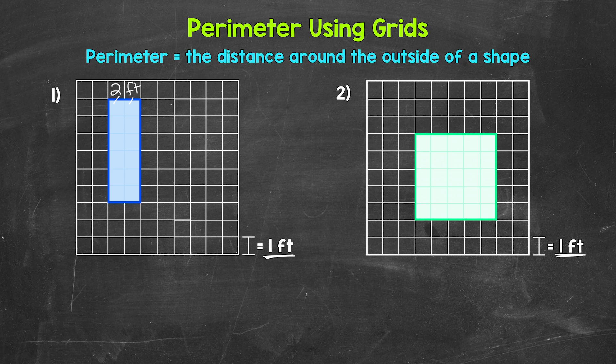Now this is a rectangle, so the opposite side — that bottom side length — is going to be the same: two feet as well. As far as the other two sides, counting up: one, two, three, four, five, six feet. So this side is going to be six feet, and the side across from it — the left side — is going to be the same: six feet as well.